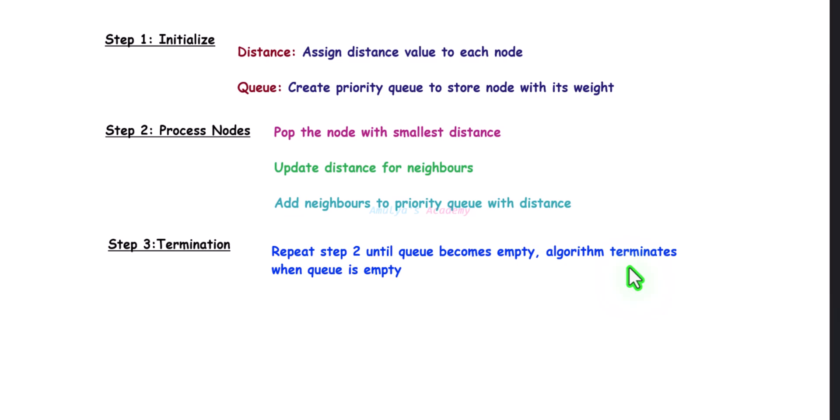The second step is to process nodes. First remove the node with the smallest distance. Then update the distance for its neighbors. For each neighbor of the current node, calculate the distance from the source node to that neighbor by adding the current node's distance and the edge weight. If the new distance is smaller than the recorded distance, update it and add the neighbor to the priority queue. Repeat this until the queue becomes empty.